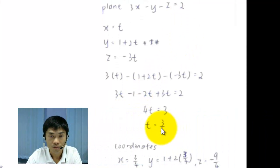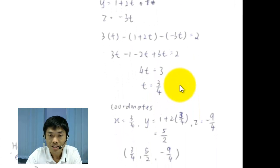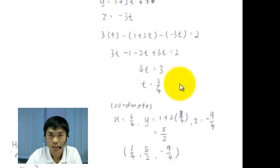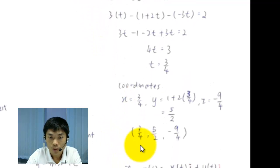and you substitute it into the plane of 3x minus y minus z equals 2. And then you solve it. You get the value of t equals 3 over 4. So what is the coordinates of the intersection between the curves and the plane? Well, you substitute back the value of t into the x, y, and z, and you end up with the coordinate of the intersection points.